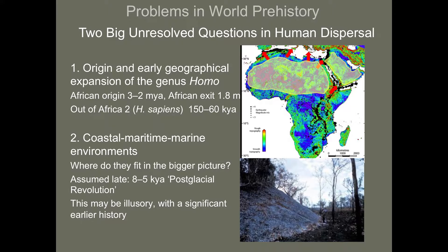All our current evidence — from fossils, genetics, chronology, and archaeology — is that our origins are deeply rooted in Africa, particularly East Africa and South Africa, with the emergence of the Homo lineage sometime between three and two million years ago, and then an expansion out of Africa at approximately 1.8 million years.